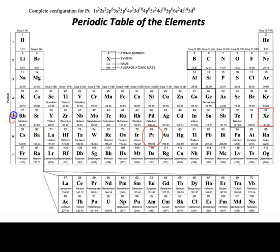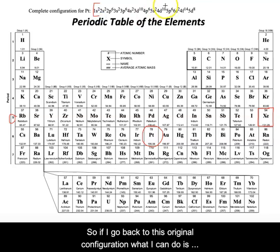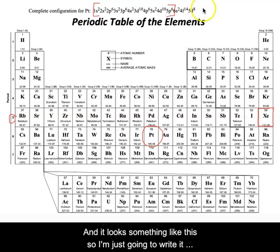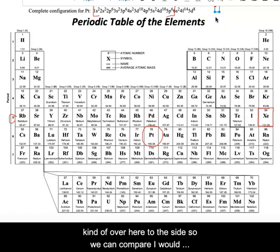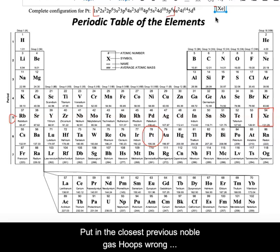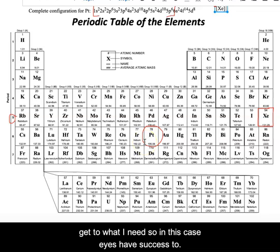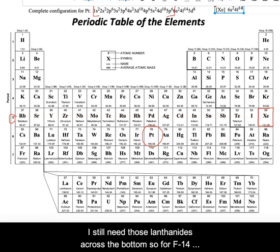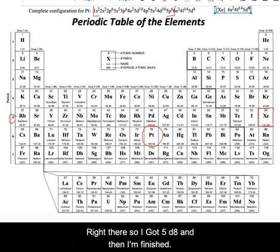I know that because it's in period 5, this is my p block, and 6 is at the end. So if I go back to this original configuration, what I can do is basically shorthand this whole part by just putting xenon in brackets. I would do square brackets — not parentheses, not curvy brackets, square brackets every time — and put in the closest previous noble gas. Then continue writing my configuration: 6s2, still need those lanthanides across the bottom so 4f14, and then the highest energy ones in that last sublevel, 5d8. And then I'm finished.